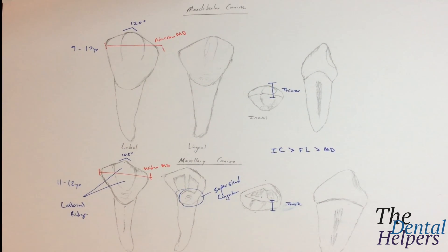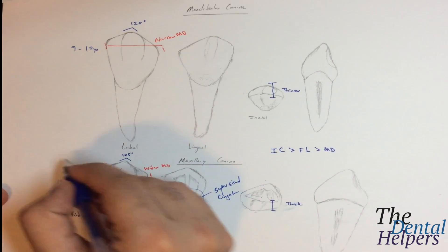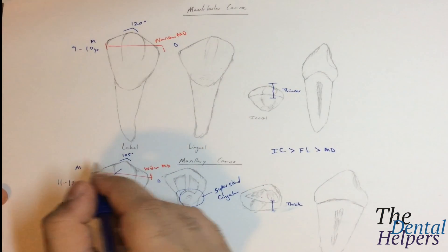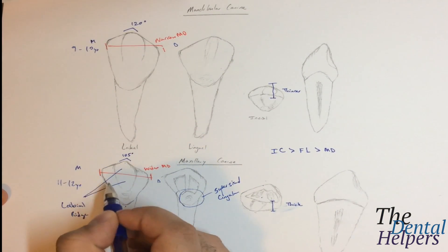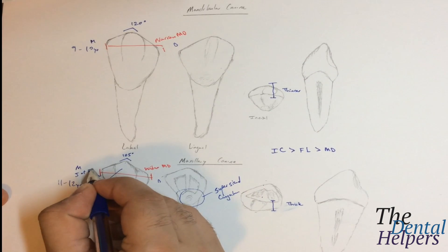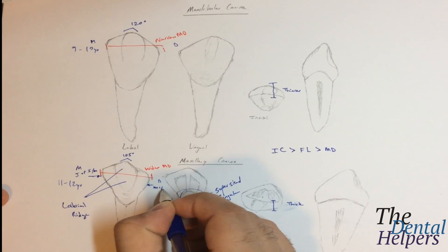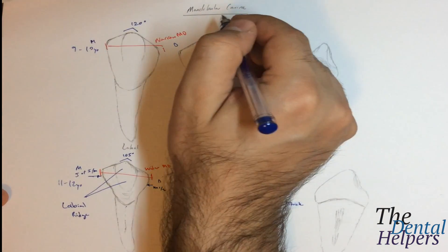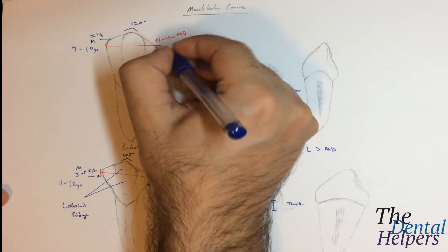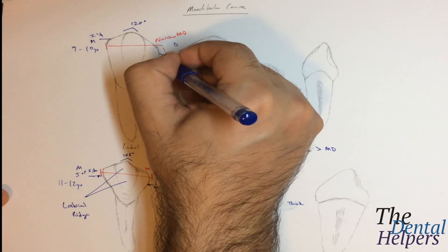For the contacts on the maxillary tooth, the mesial contact is going to be at the junction of the incisal and middle thirds. The distal contact is going to be at the middle third. On the mandibular, the mesial contact is going to be at the incisal third — right at the top — and then on the distal it's going to be at the junction of the incisal and middle thirds.